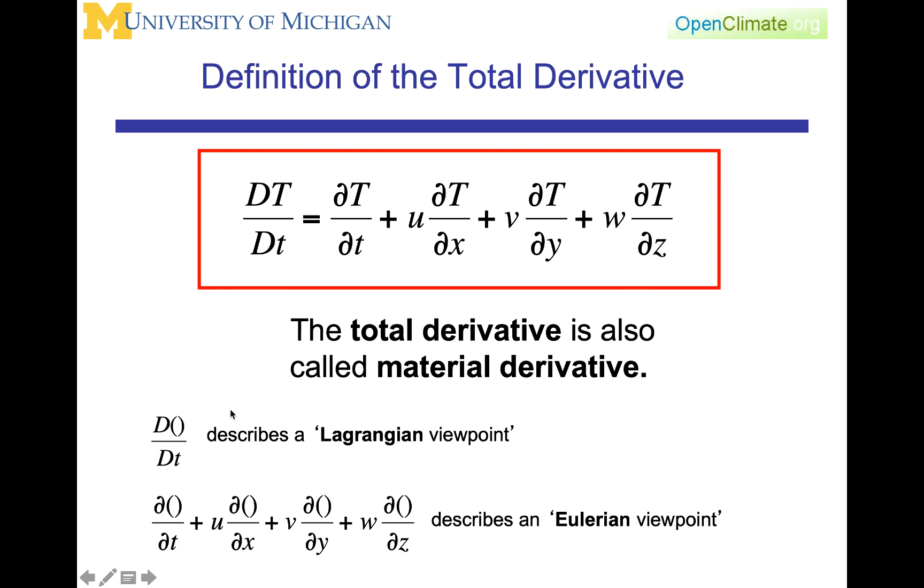Going back to our points of view, big D by Dt describes a Lagrangian viewpoint. The material derivative expanded out in terms of the partial derivatives that have the local change due to partial d by dt, and then the advective changes, heterogeneity of the field being brought to a point by the velocity is the Eulerian viewpoint. So this Lagrangian viewpoint is following a parcel.